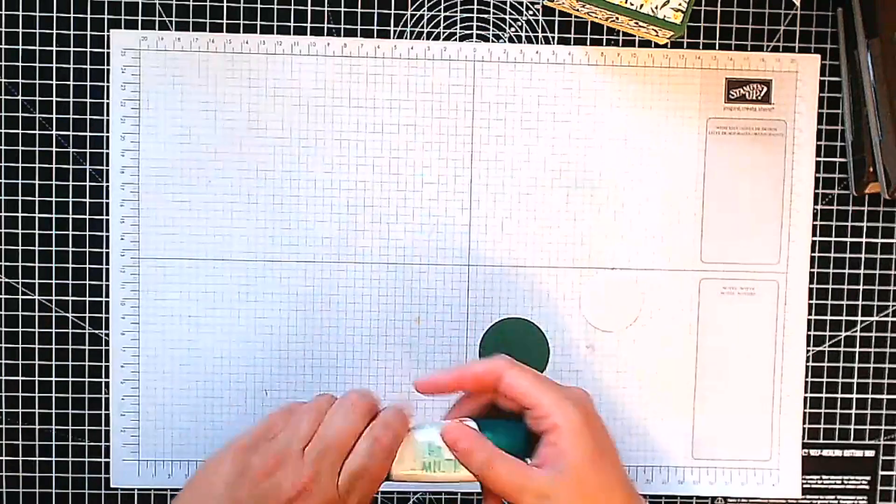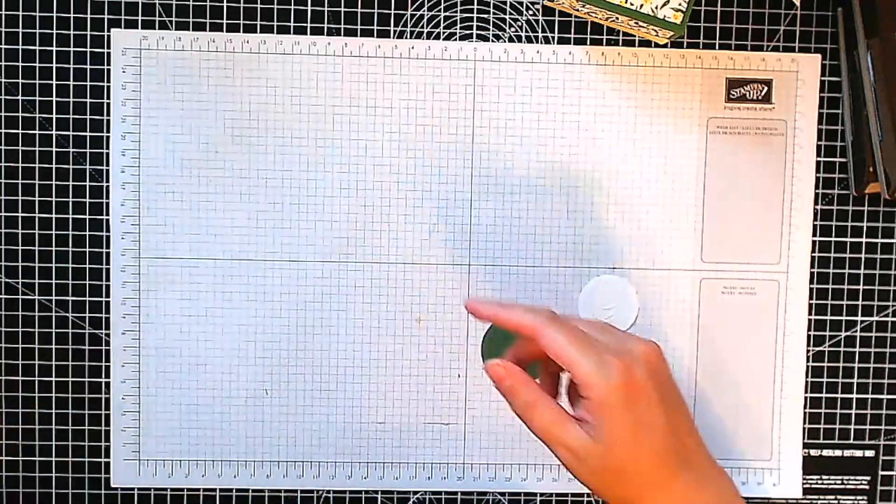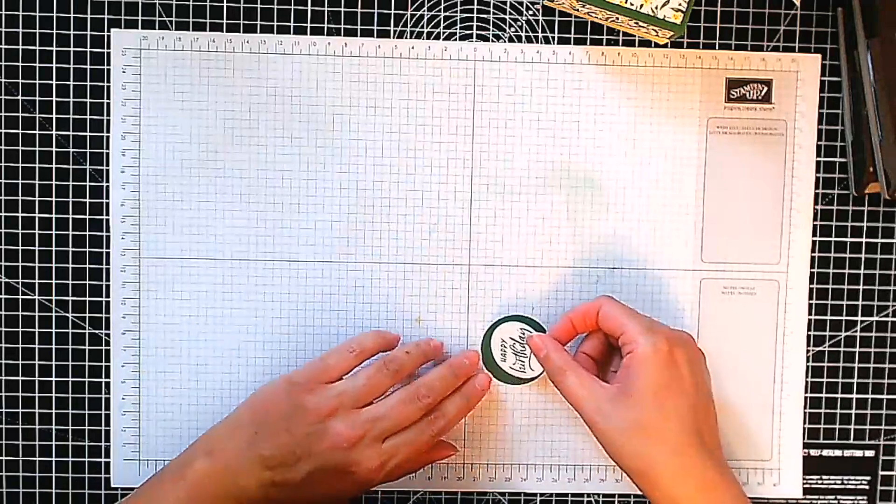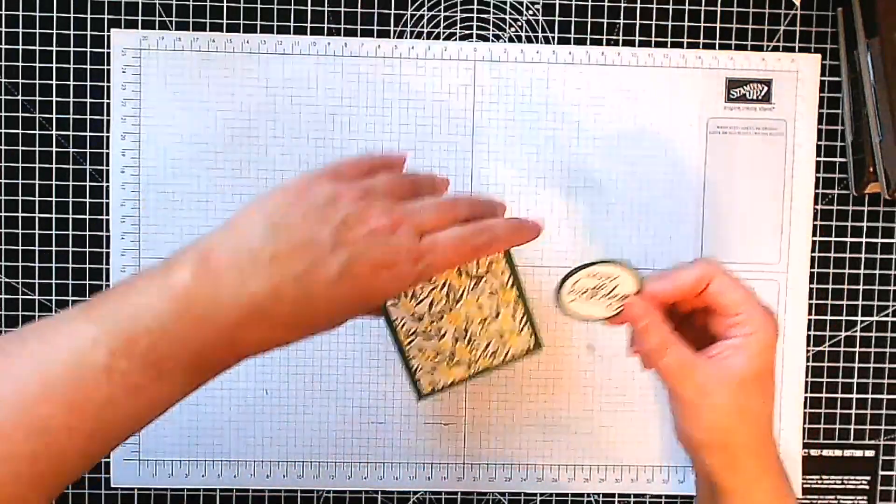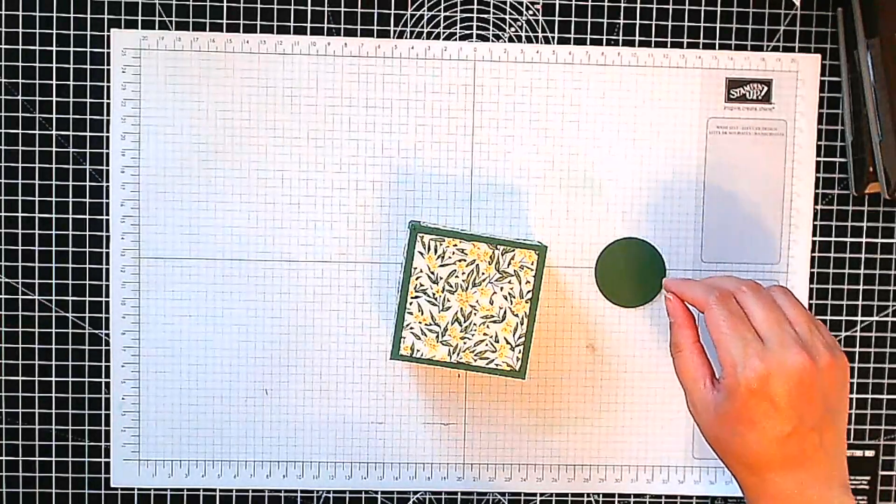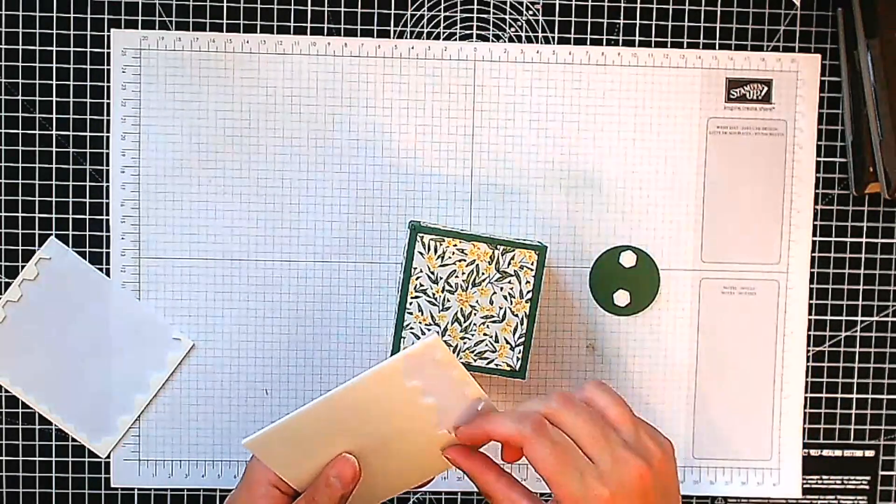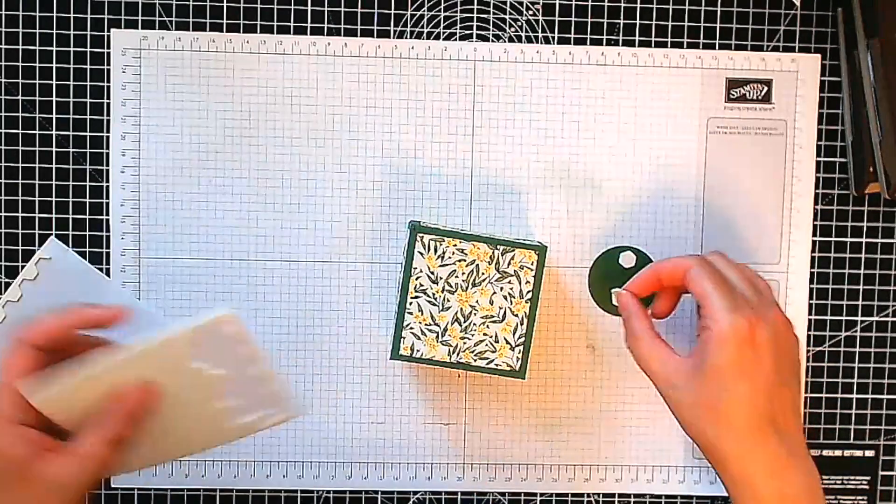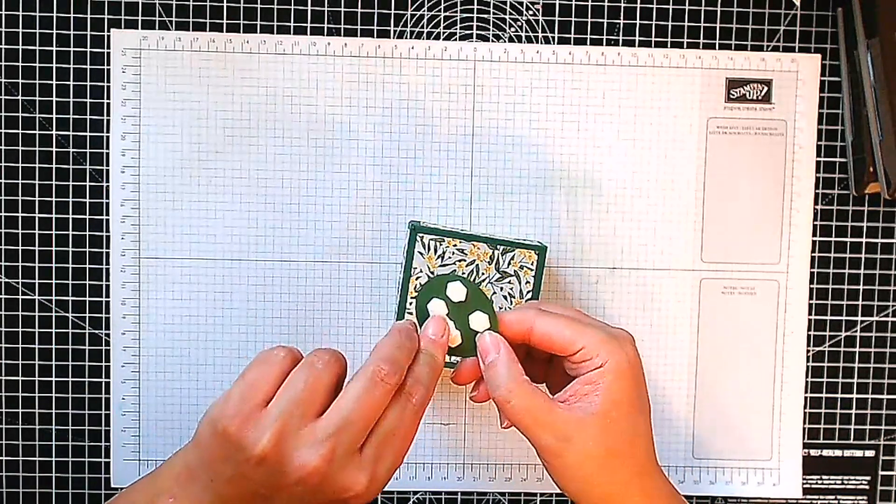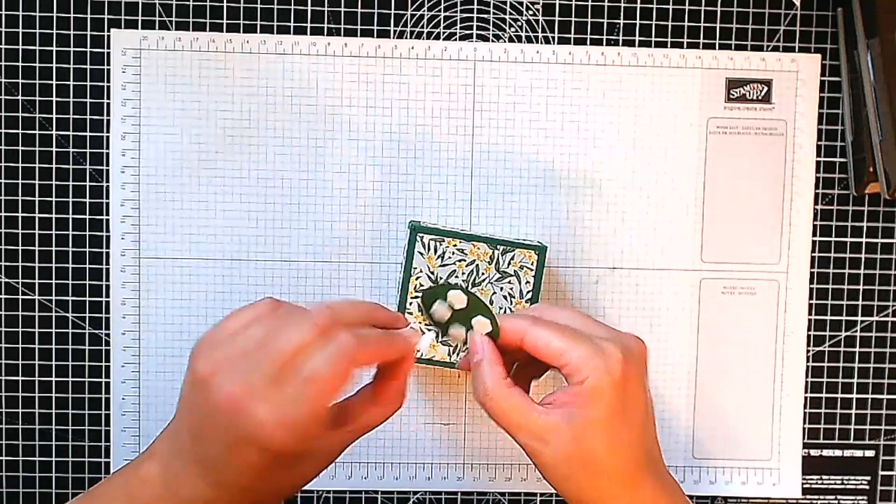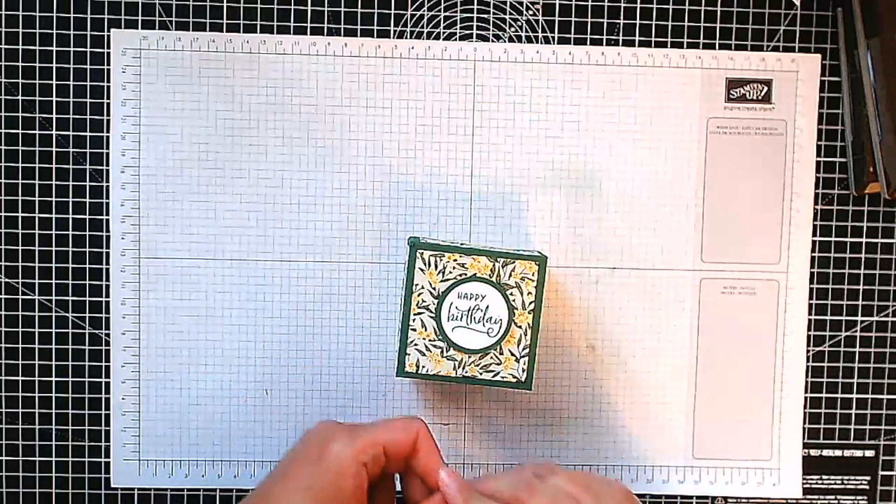And I'm going to stick one to the other quickly. This is just going to be on the front of our box, so I'm going to use some dimensionals. So I'm just going to put this down just in the center of it like that.